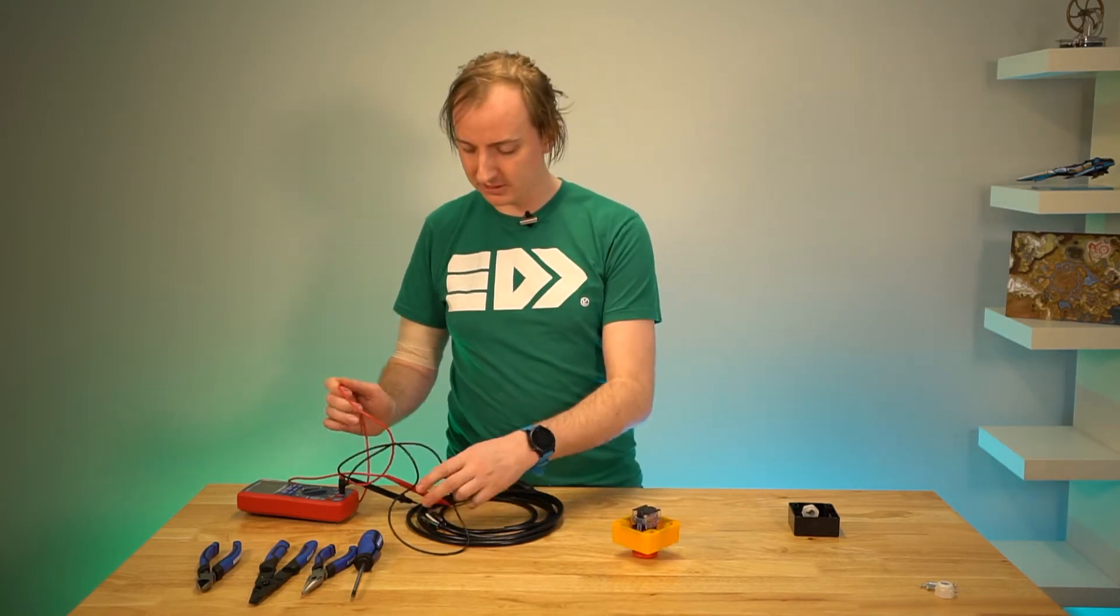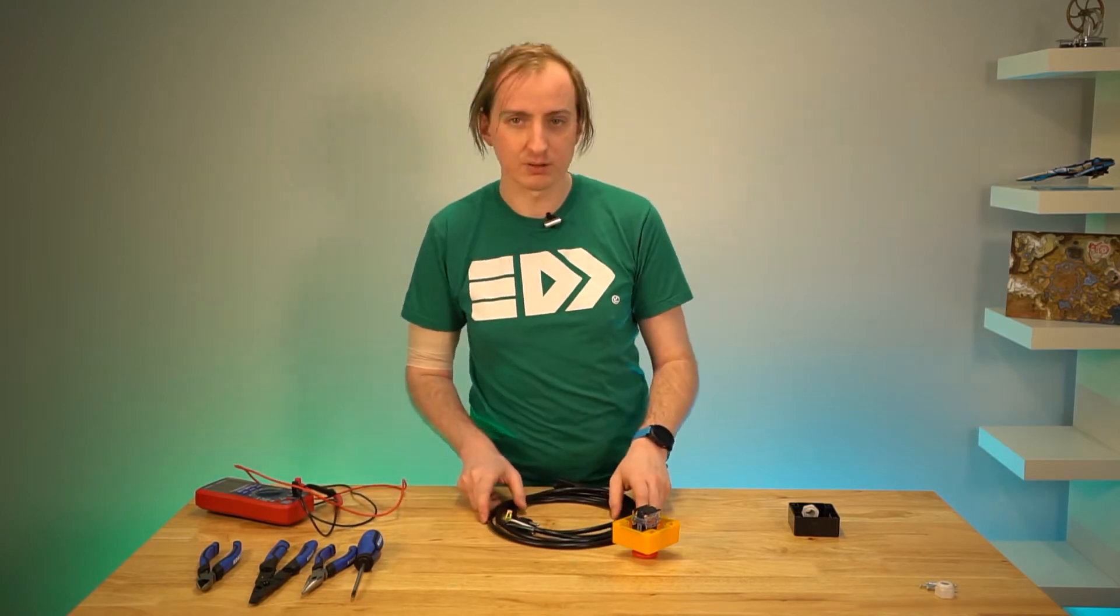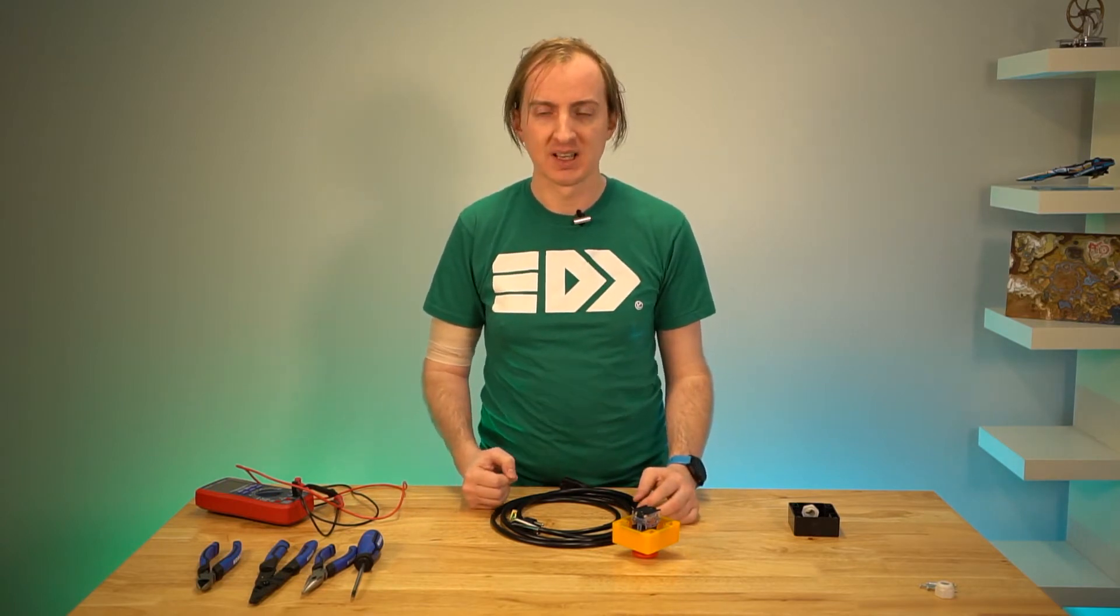Now, in theory, for full electrical safety, if you're doing something like a circuit breaker, you want to always wire things so that both your live and neutral shut off. But in this case, we're not making a circuit breaker.